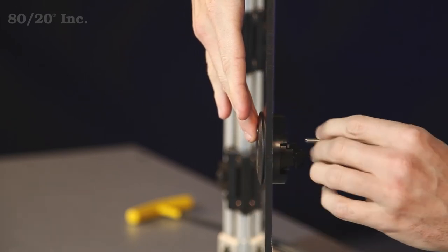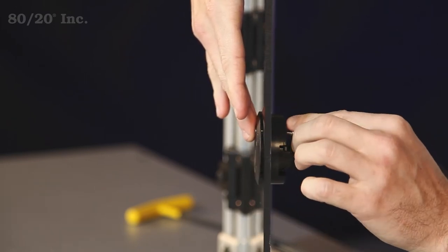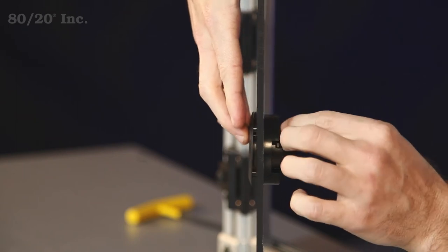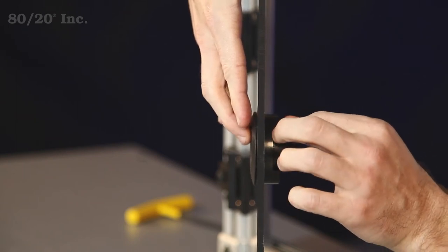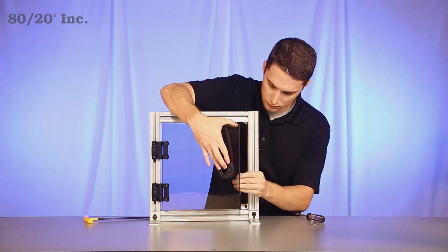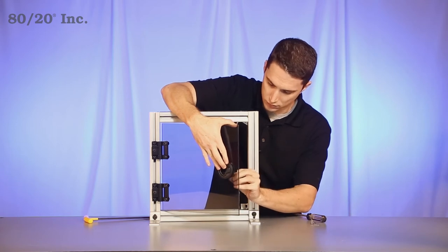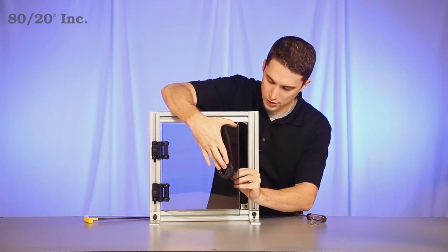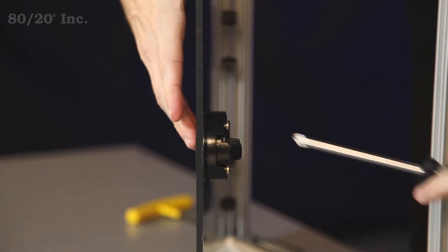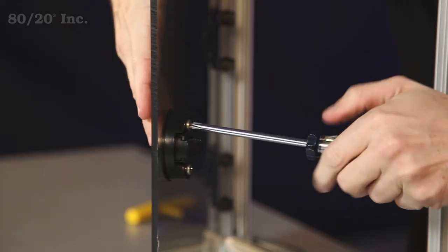You'll take your screws and start hand tightening them down. Put that bottom one on there. From there, you'll take your Phillips screwdriver and tighten those down.